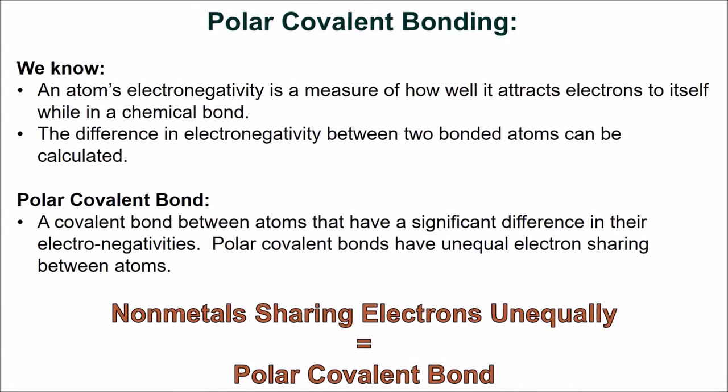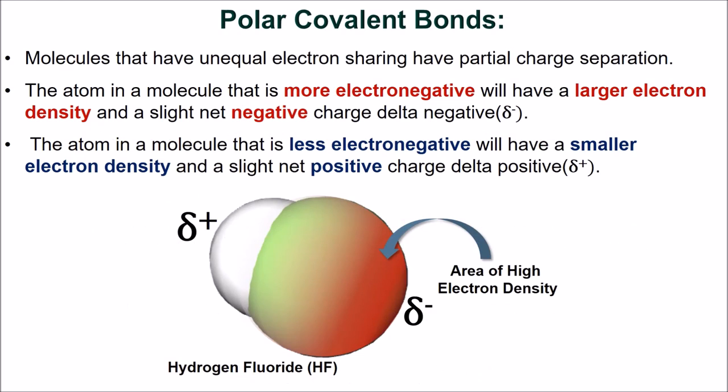Polar covalent bonding is the unequal sharing of electrons between atoms. Molecules with unequal electron sharing have a partial charge separation on the bonded atoms. The atom that is more electronegative will have a larger electron density and a slight net negative charge, termed delta-negative. The atom that is less electronegative will have a smaller electron density and a slight net positive charge, termed delta-positive. In hydrogen fluoride, the electron density is centered on the fluorine atom because fluorine is more electronegative than hydrogen — fluorine is delta-negative and hydrogen is delta-positive.